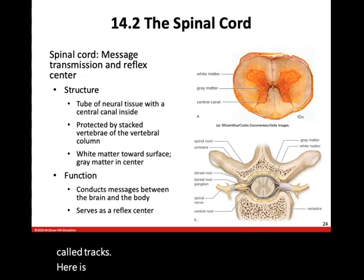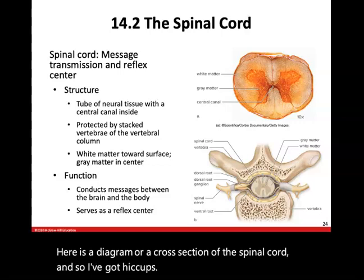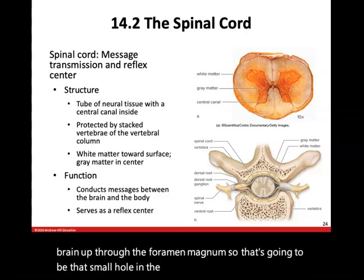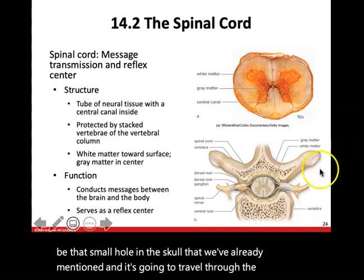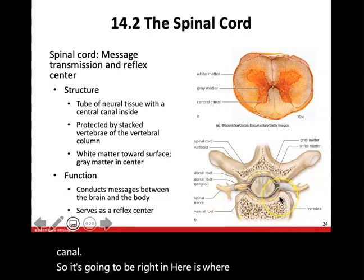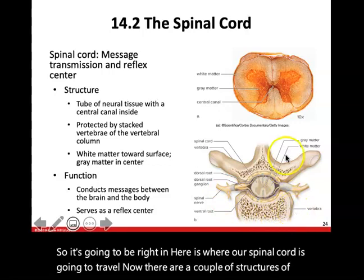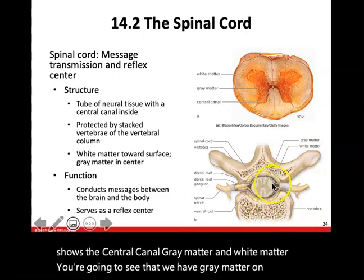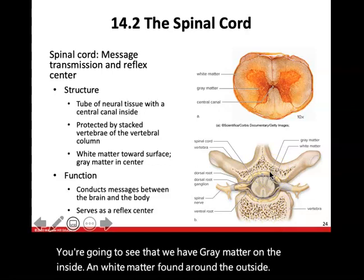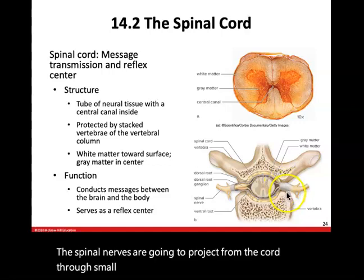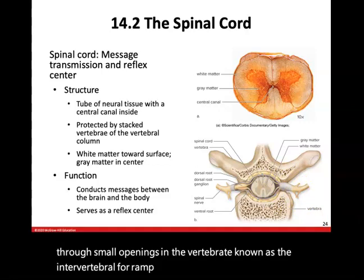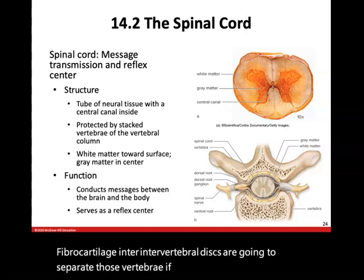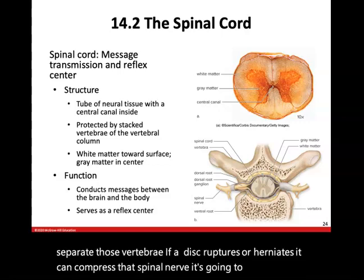Here is a cross-section of the spinal cord. The spinal cord extends from the base of the brain through the foramen magnum — that small hole in the skull — and travels through the vertebral canal. The cross-section shows the central canal, gray matter on the inside, and white matter on the outside. Spinal nerves project from the cord through small openings in the vertebrae known as intervertebral foramina. Fibrocartilage intervertebral discs separate those vertebrae; if a disc ruptures or herniates, it can compress the spinal nerve, resulting in pain and potentially loss of mobility.